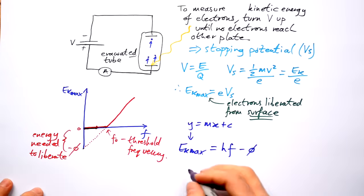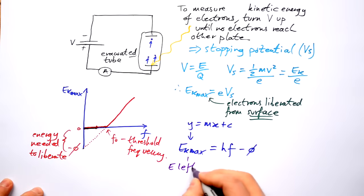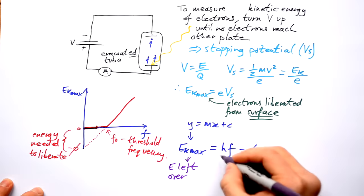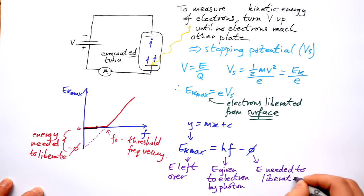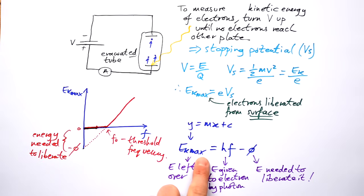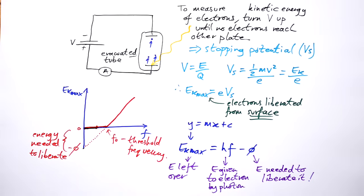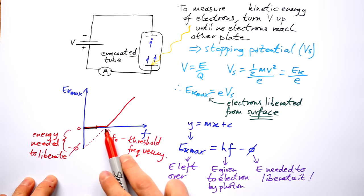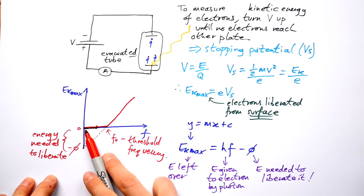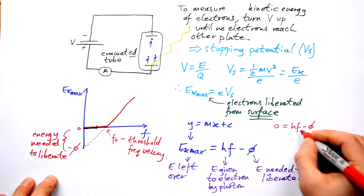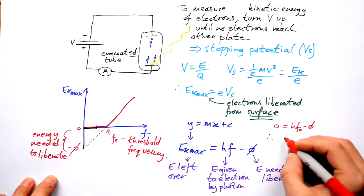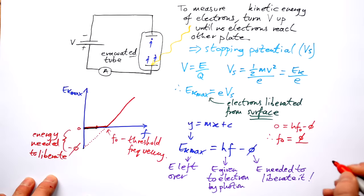The photoelectric equation isn't as confusing as it seems: EK max is the energy left over for the electron after liberation; hf is the energy given to it by the photon; and φ is the energy needed to liberate it. Energy left over equals energy given minus energy needed. At the threshold frequency, kinetic energy is zero: 0 = hf₀ − φ, so the threshold frequency f₀ = φ / h.